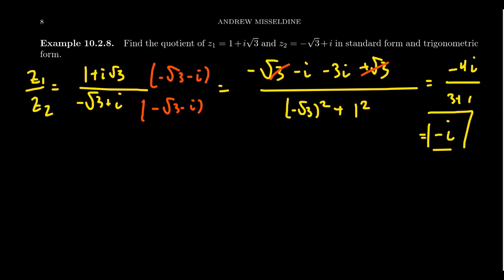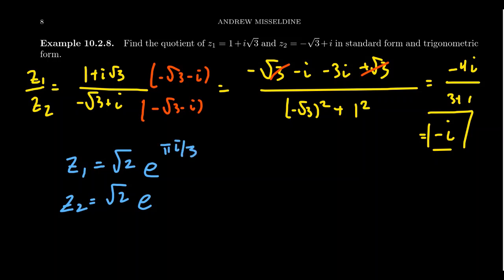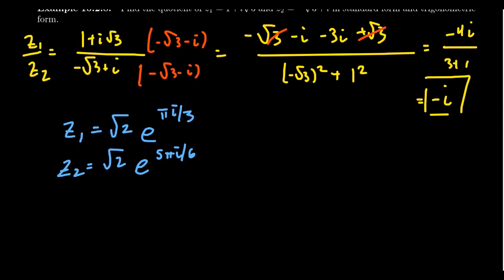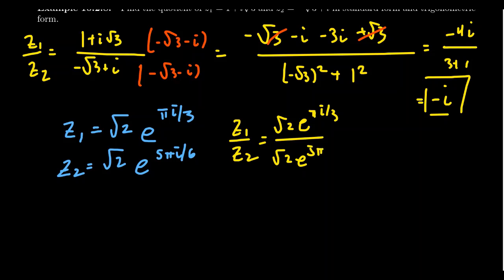Now let's do the same division using polar form. We previously computed the moduli of both numbers: both are √2. Their arguments are: π/3 for z1 and 5π/6 for z2. In polar form, z1/z2 = (√2·e^(πi/3)) / (√2·e^(5πi/6)). The moduli cancel each other out immediately, so we just need to subtract the exponents: e^(i(π/3 − 5π/6)).